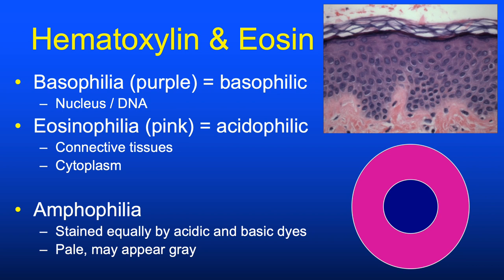The H&E double stain has been a winning one-two punch combination for about a century and a half. Hematoxylin is a positively charged, basophilic dye—a great nuclear stain because it binds the negatively charged phosphate groups in nucleic acid DNA. Eosin is a negatively charged, acidophilic dye that differentially binds most other structures in the relatively acidic cytoplasm of cells.